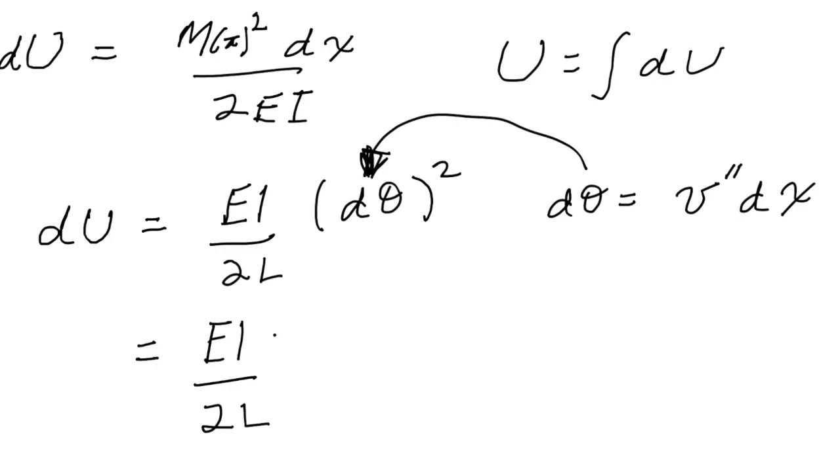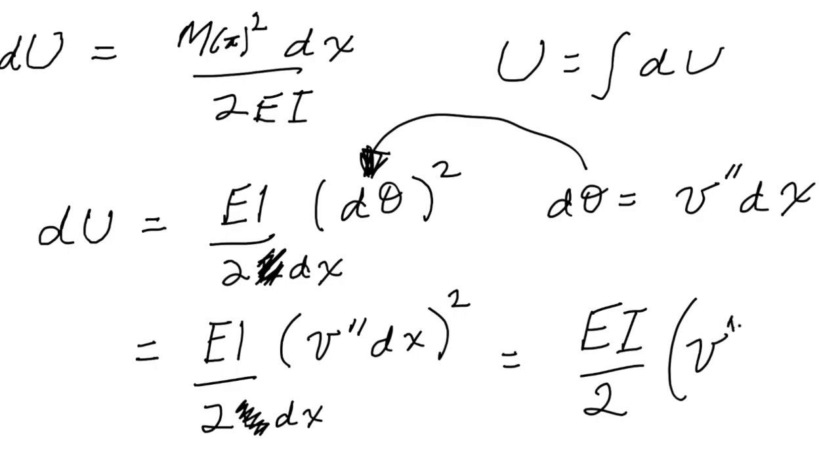So then we end up with... actually this L also needs to be a dx. Then d theta is v double prime dx squared, which leaves us with our final equation: EI over 2 times v double prime squared dx.